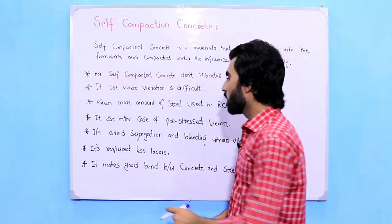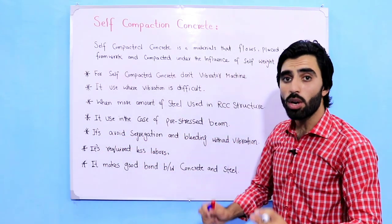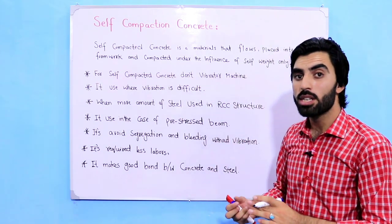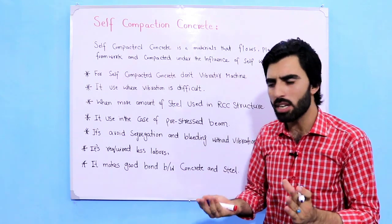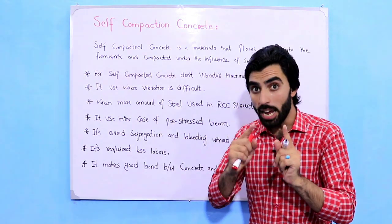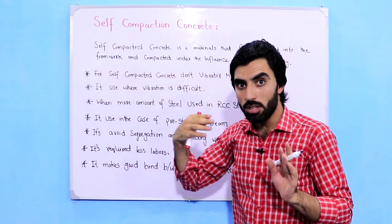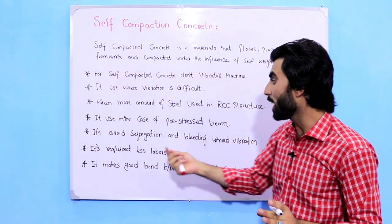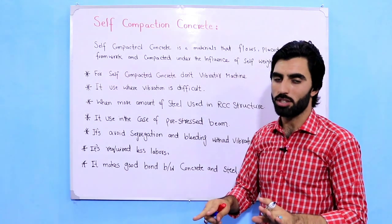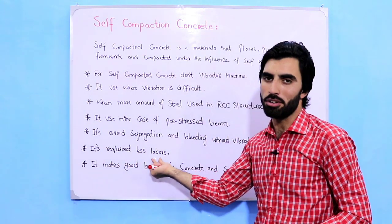Self-compacting concrete avoids segregation and bleeding without vibration. If you don't use a vibrating machine with normal concrete, it causes bleeding and segregation. But if you use self-compacting concrete, it avoids segregation and bleeding even without vibration.